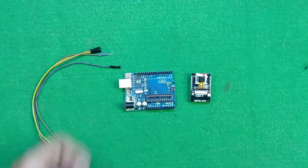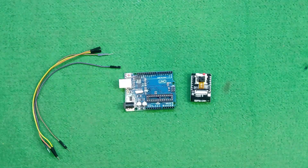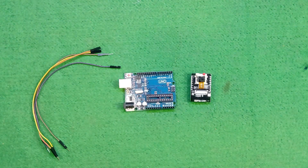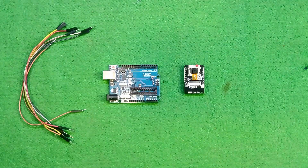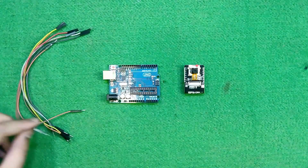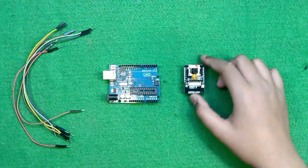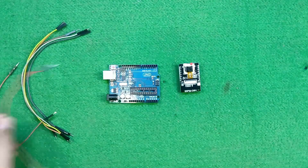Now let's see the circuit diagram — how we can connect the Arduino Uno with the ESP32 cam at the time of uploading the code. Follow the circuit diagram shown on the screen carefully. First of all, for giving the power supply to this ESP32 cam, we need to give the positive and negative from the Arduino Uno.